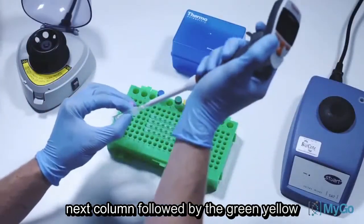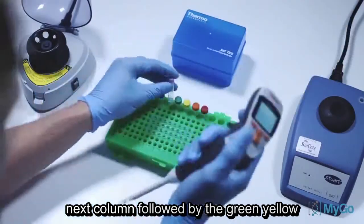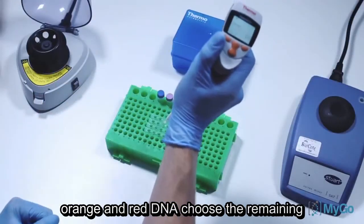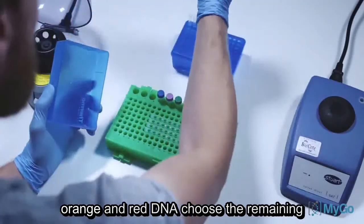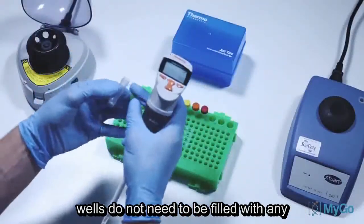Repeat with the purple tube into the next column, followed by the green, yellow, orange and red DNA tubes. The remaining wells do not need to be filled with any reagents.